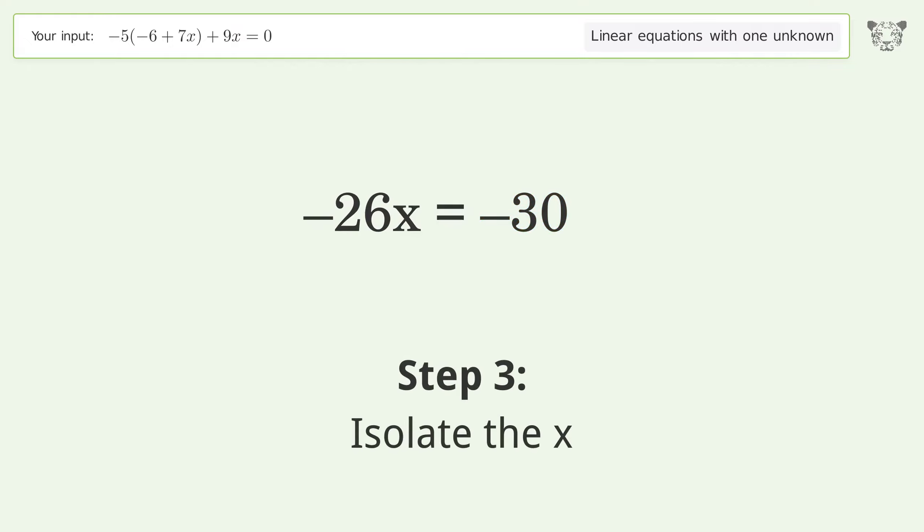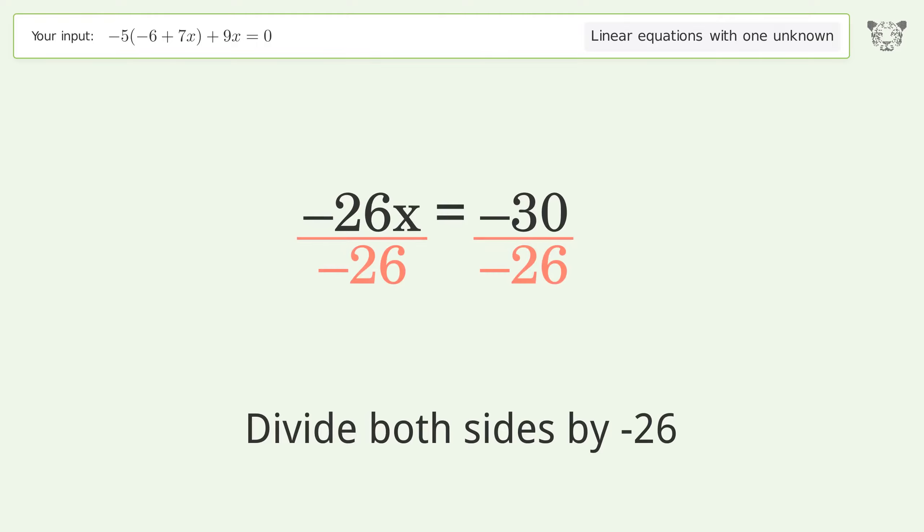Isolate the x by dividing both sides by negative 26, then cancel out the negatives.